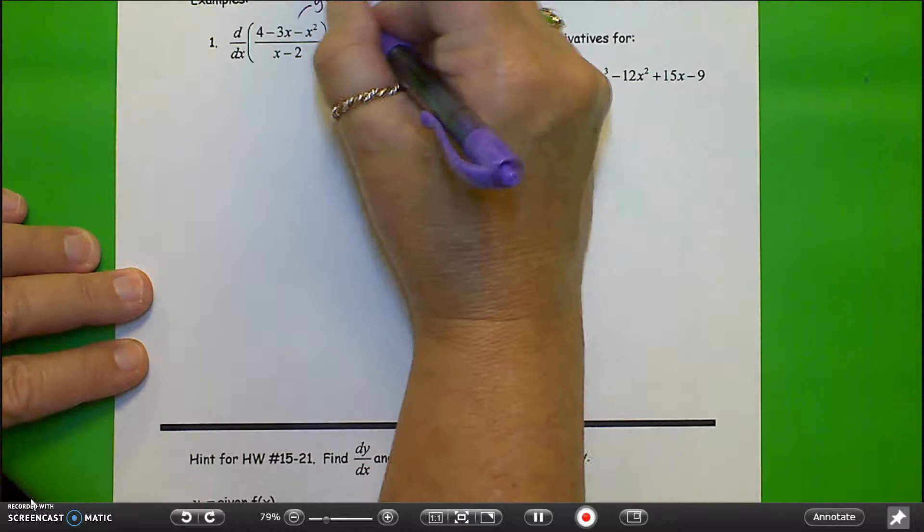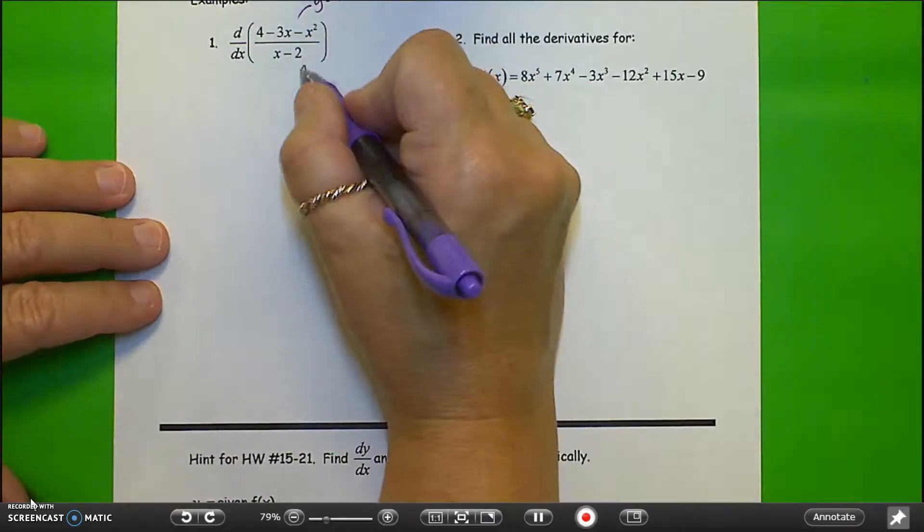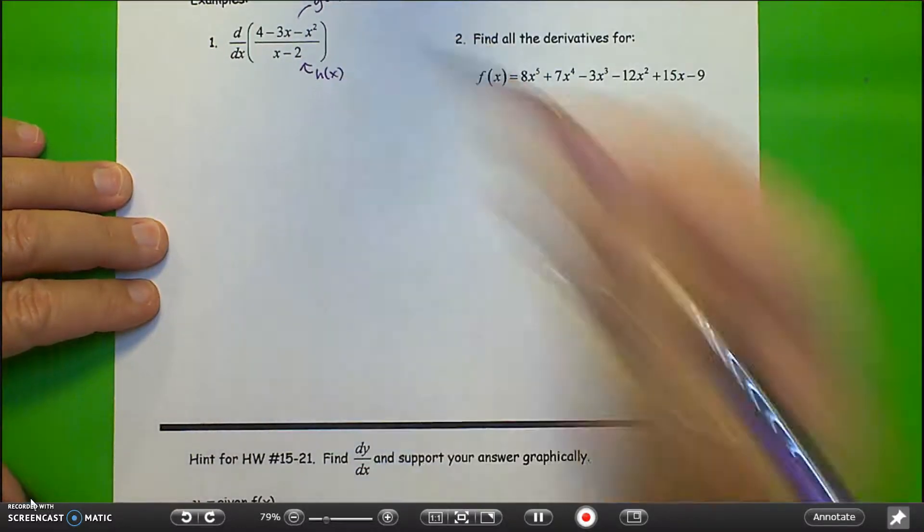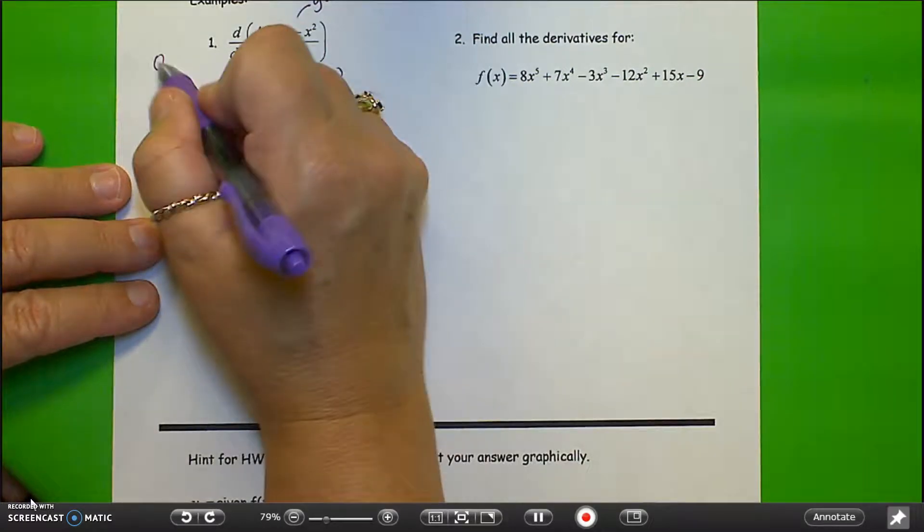This top function we'll treat as g of x for the formula, bottom function h of x, and we're going to use the quotient rule.